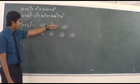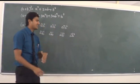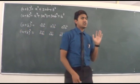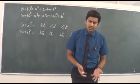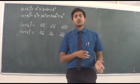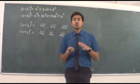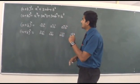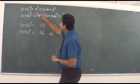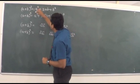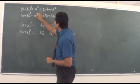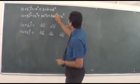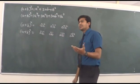This particular pattern is followed for each and every expansion — whether you consider (a+b)¹⁰ or (a+b)⁵⁰. The important part is the coefficients: 1, 2, 1 for (a+b)², and 1, 3, 3, 1 for (a+b)³.